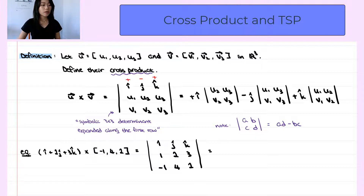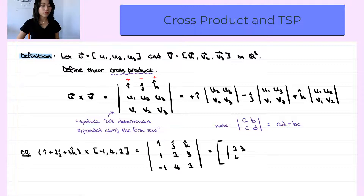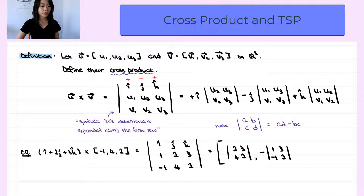And this equals — from the definition, we can see that the result of a cross product is a vector, so I'm going to write it in vector form. The first component would be the determinant of the 2 by 2 matrix after we eliminate the first row and the first column: determinant of 2, 3, 4, and 2. The second component, we add a negative sign, then a 2 by 2 determinant after we eliminate the first row and second column: 1, 3, negative 1, and 2. And the last component, a 2 by 2 determinant after we eliminate the first row and third column: 1, 2, negative 1, and 4.